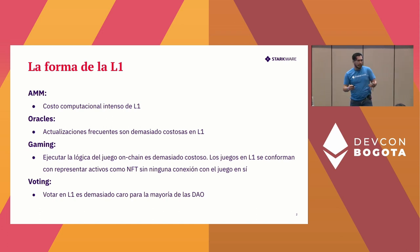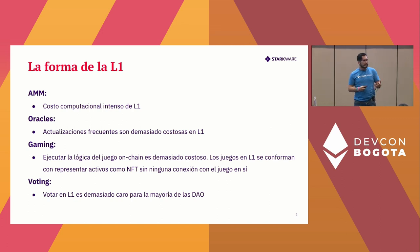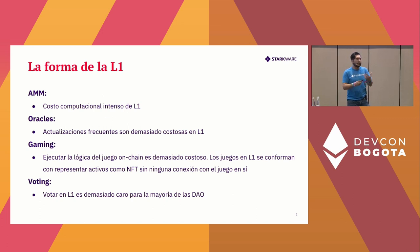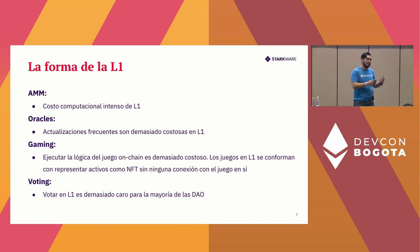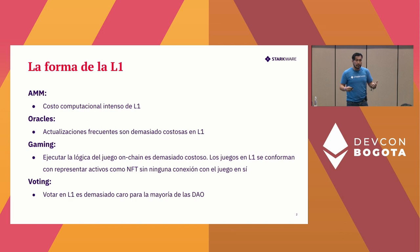We also had oracles that allow us to introduce off-chain data on-chain, but it was also very expensive — moving data on-chain is expensive. We also have gaming where you can have NFTs, a sword for your game, your gun, and so on. But the game logic was not on-chain, it was not auto-regulated, because this is very expensive. We also have voting apps, but writing to the blockchain is very expensive, so voting was also really expensive on layer one.